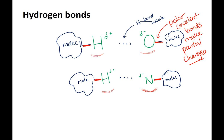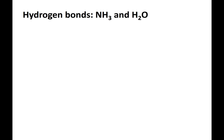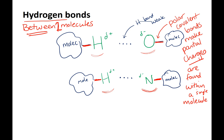Hydrogen bonds are always between molecules, as opposed to within a molecule. Polar covalent bonds are found within a molecule. Hydrogen bonds are between two molecules. Hydrogen bonds are shown with dots because they are weaker bonds.